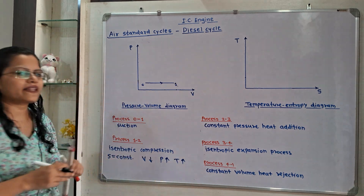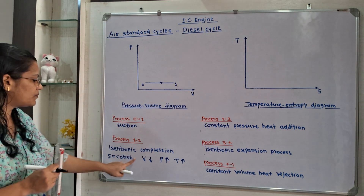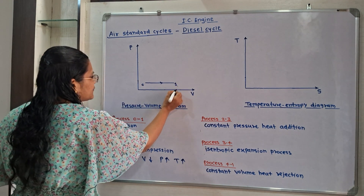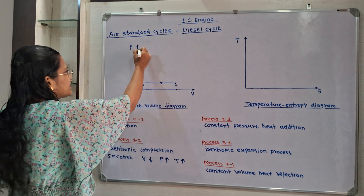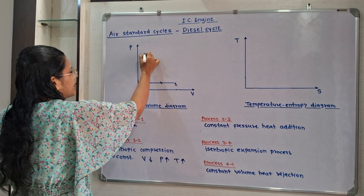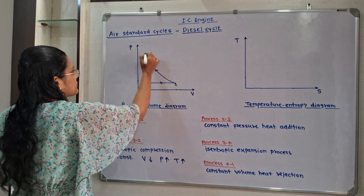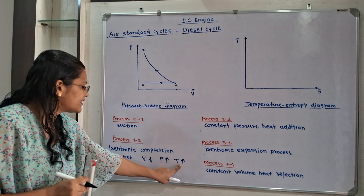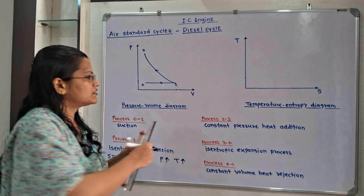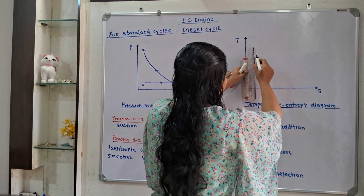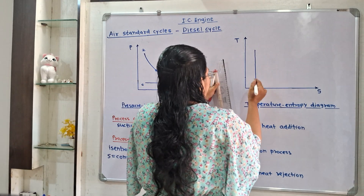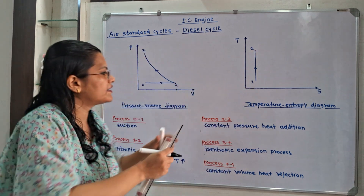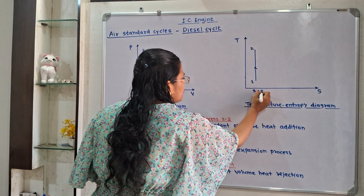With these parameters we will draw the pressure-volume diagram. Pressure increases and volume decreases, so point 1 is at V1. We have to show decrease in volume but increase in pressure, so I will select point 2. For the temperature-entropy diagram, temperature increases but entropy remains constant, so S1 equals S2, and I will show points 1 and 2 accordingly.